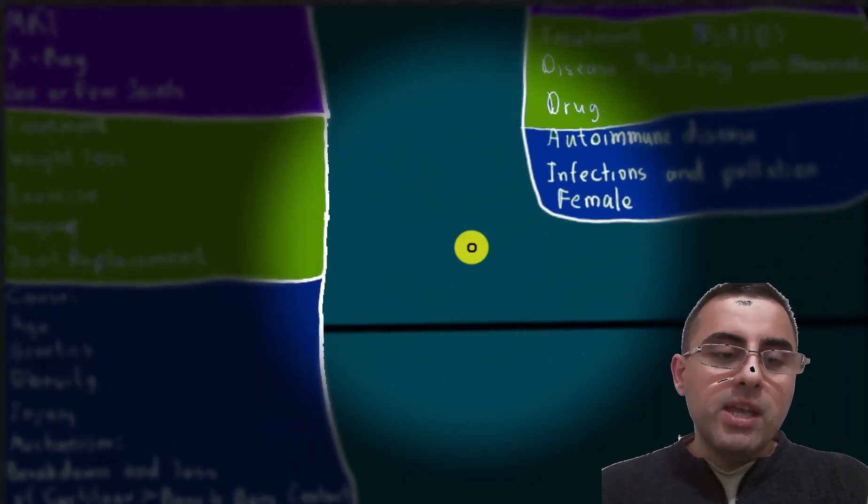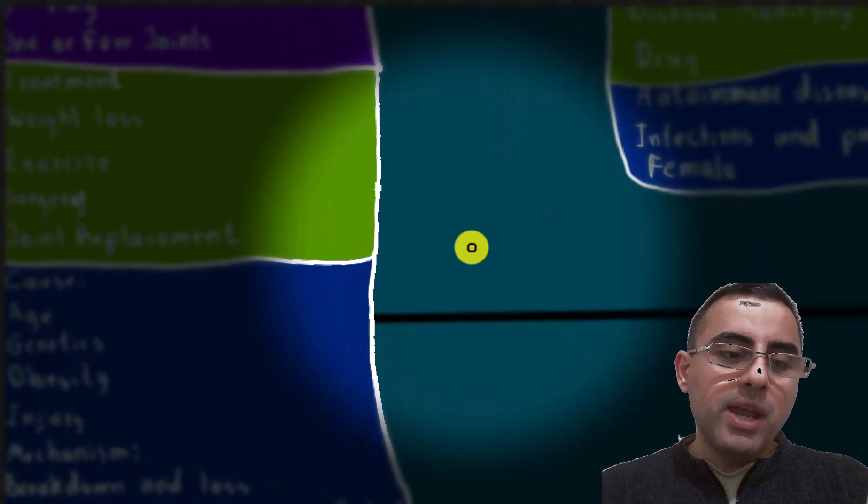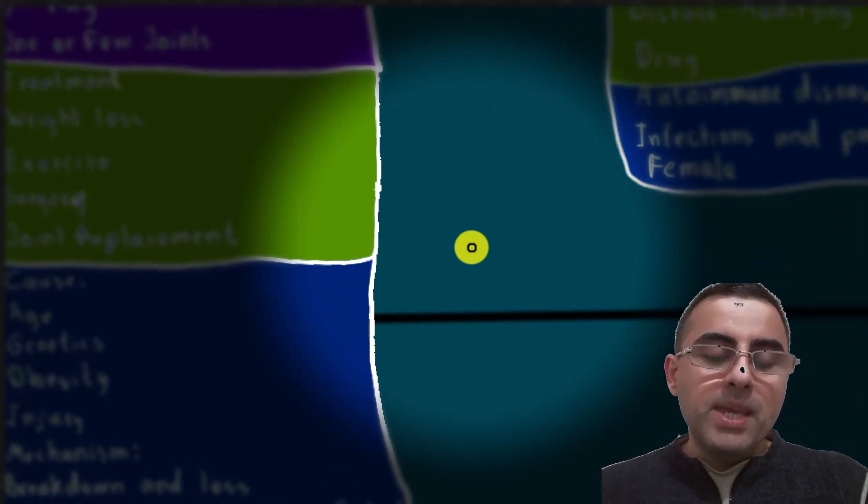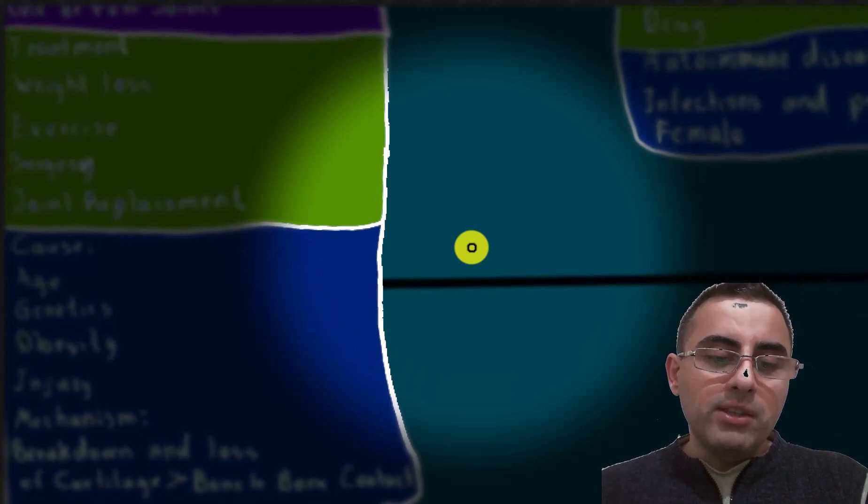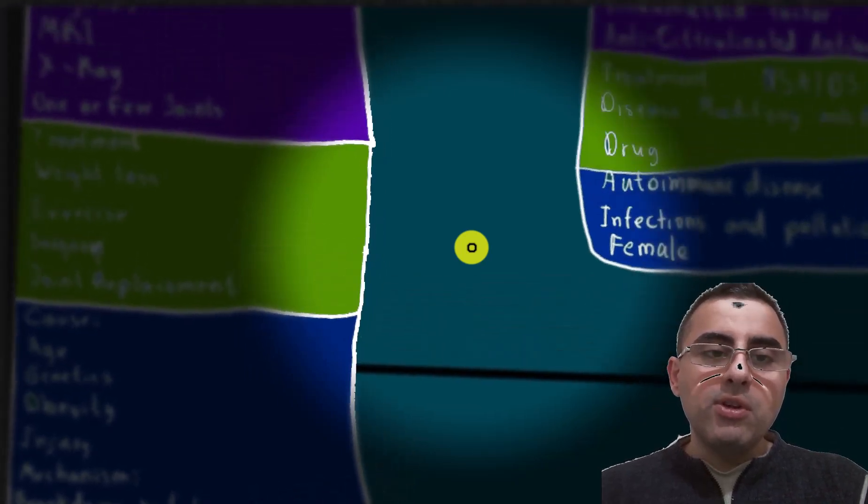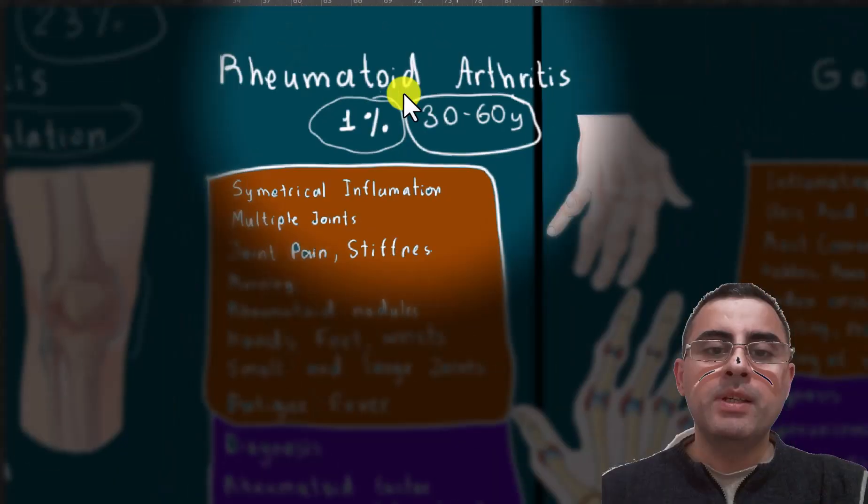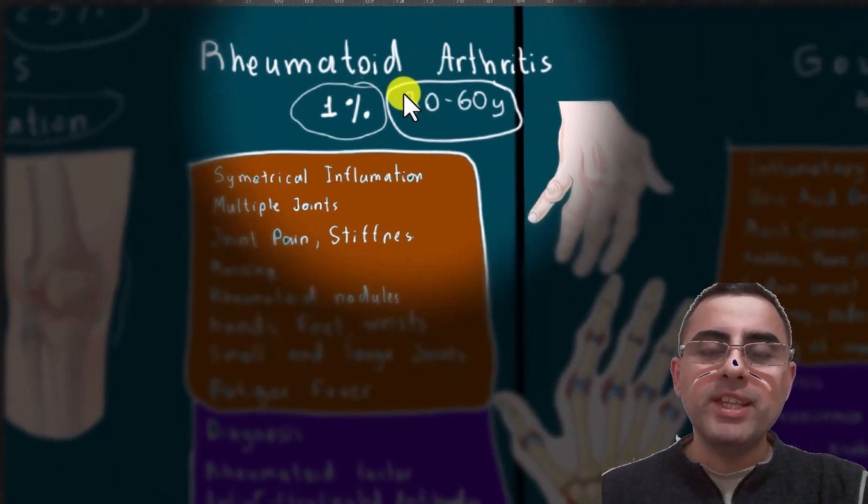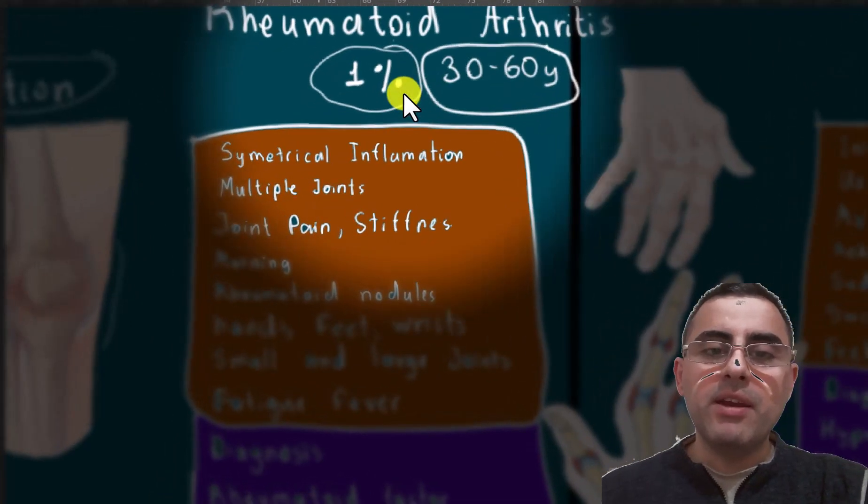The exact mechanism and cause of osteoarthritis is not understood, but it is related to age, genetics, obesity, and injury. The mechanism is breakdown and loss of cartilage, which causes bone-to-bone contact and inflammation. Second most important disease is rheumatoid arthritis.